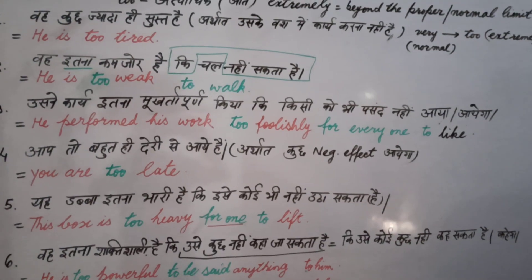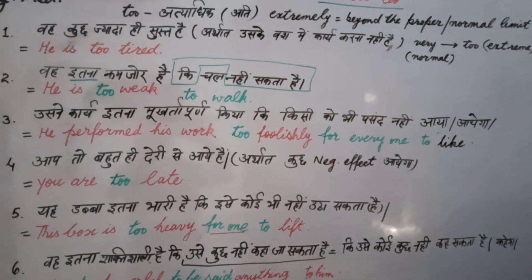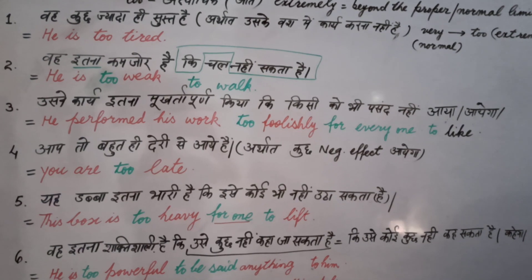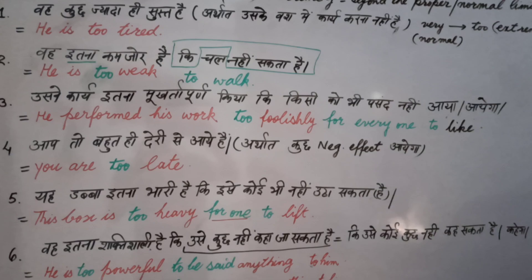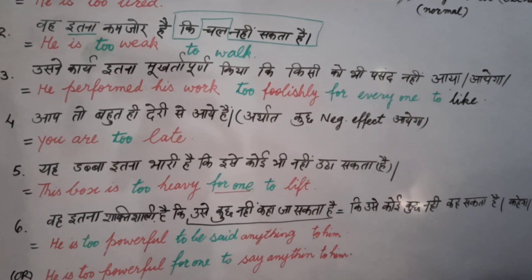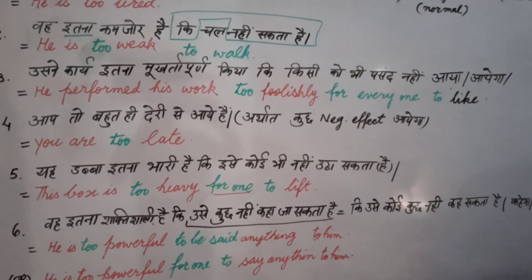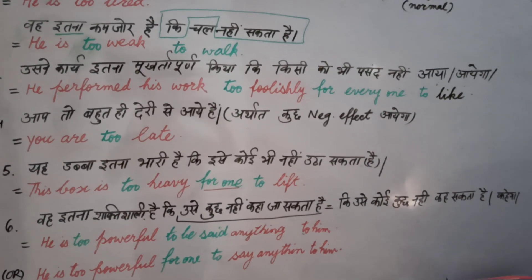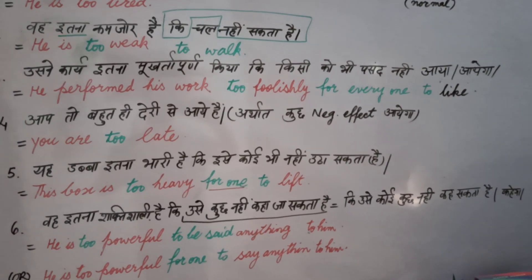In sentence one: 've itana kamzor hai,' and in sentence four: 'Aap toh bohat hi deri se aay hai' — there are more words, but the translation is the same. We learn that we should not run after word meanings; we should go according to the syntax, meaning the structure of the sentence. 'You are too late' — the translation is 'you are too late,' because something negative is going to happen.